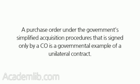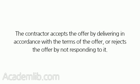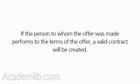A purchase order under the government's simplified acquisition procedures that is signed only by a contracting officer (CO) is a governmental example of a unilateral contract. The contractor accepts the offer by delivering in accordance with the terms of the offer, or rejects the offer by not responding to it. If the person to whom the offer was made performs to the terms of the offer, a valid contract will be created.